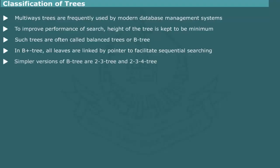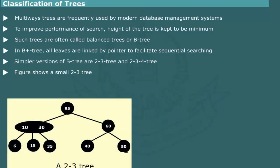Simpler versions of B-tree are used in some applications. Two such variants are known as B-2-3 and B-2-3-4 tree. The former contains 2 to 3 nodes per child and later 2 to 4 nodes per child. Figure shows a small B-2-3-tree.